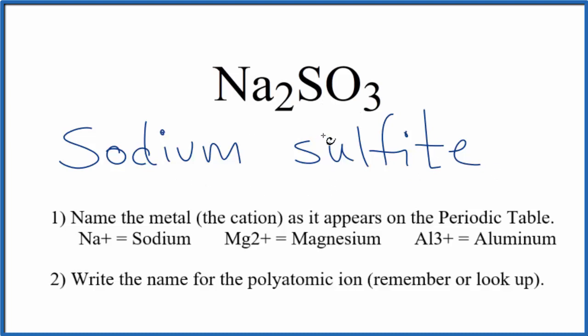If you're given the name and you need to write the formula, you have to know that the sulfite ion, that whole thing right here, has an ionic charge of 2 minus. Sodium's in group 1, 1 plus ionic charge. So we need two of these 1 plus sodium ions to balance out the 2 minus on the sulfite ion.